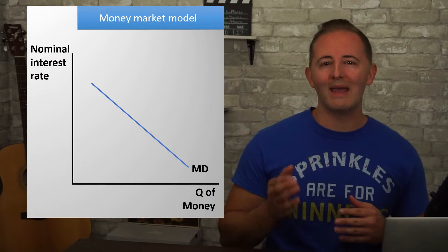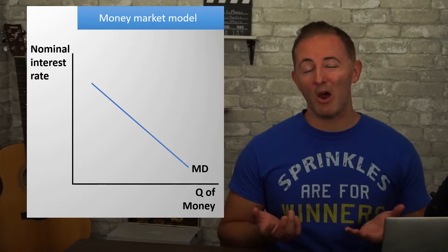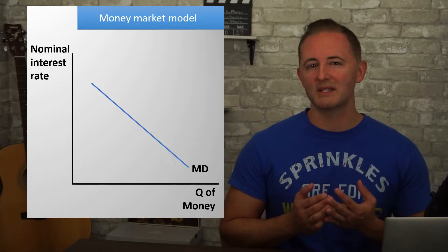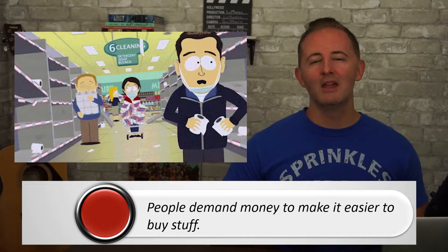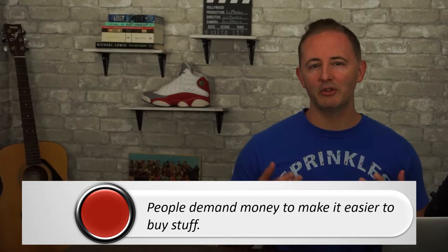To understand why the MD curve is downward sloping, we have to start by answering the question: why do people demand money? We demand money specifically to make it easier to buy stuff. This means that we typically don't want to hold all of our assets or wealth in the form of money, except to be able to buy stuff. Elon Musk and Jeff Bezos don't have billions of dollars in money so they can Scrooge McDuck into their gold coins. Why not? Because money — using the narrow M1 definition — includes currency, demand deposits, and savings deposits, which earn very little to no interest. So for whatever amount of our assets we choose to hold as money, we're giving up the interest our wealth could be earning if it were held in interest-bearing investments like bonds or even just a savings account.